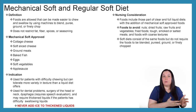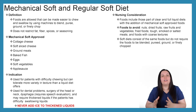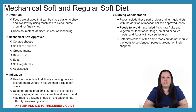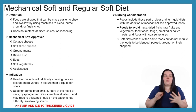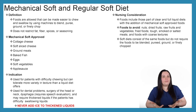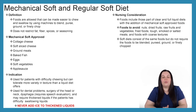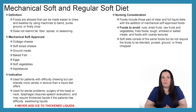Now we're going to transition away from liquid diets and start looking at mechanical soft and regular soft diets — we're actually going to start putting food in these patients. Foods are made easier to chew and swallow using machines to blend, puree, grind, or finely chop. It does not restrict fat, fiber, spices, or seasoning. Approved items include cottage cheese, sliced cheese, ground meats, baked fish, eggs, soft vegetables, and applesauce.